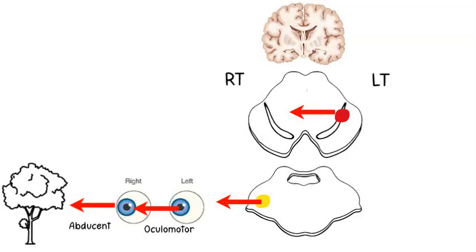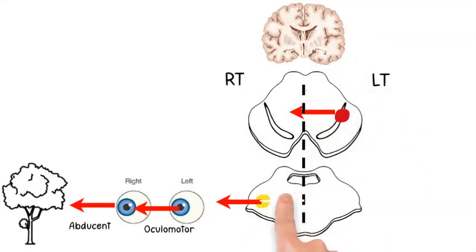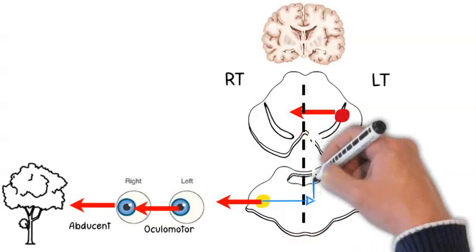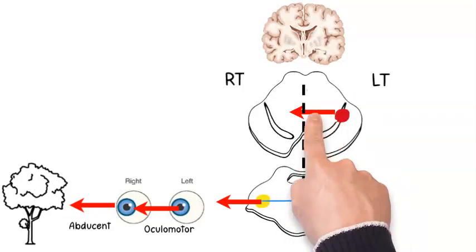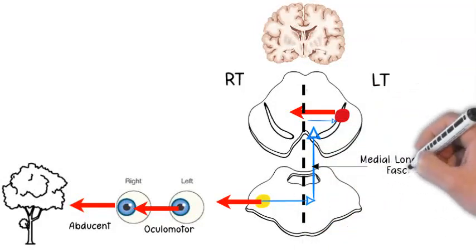In order for this conjugate horizontal eye movement to be done, there should be a connection between the abducent nucleus on the right pons with the oculomotor nucleus on the left midbrain. This connection is done by what is called the medial longitudinal fasciculus.